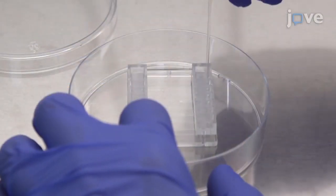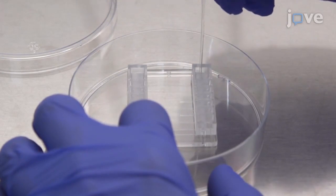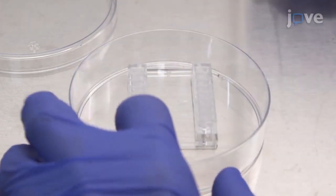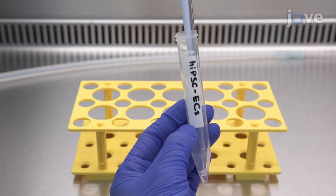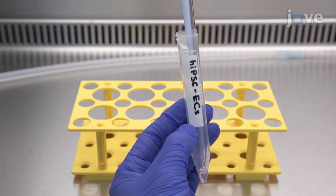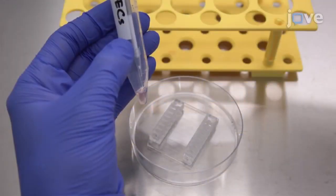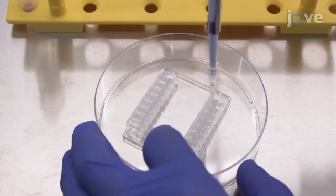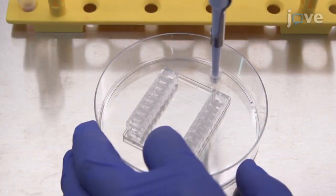Next, aspirate the fibronectin solution from all of the channels of the microfluidic chip and thoroughly mix the cells to obtain a homogeneous cell suspension before using a 10 µL pipette tip to inject 6 µL of cells into each channel.